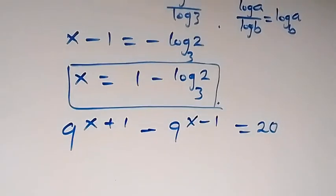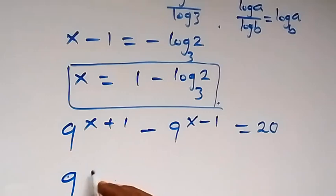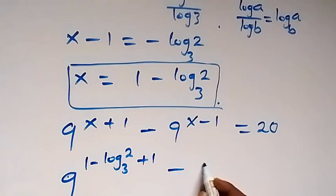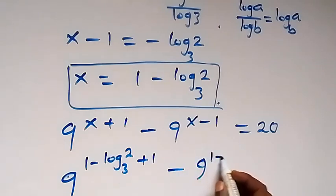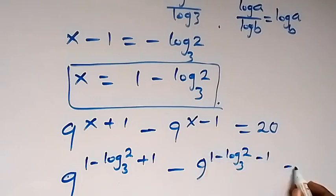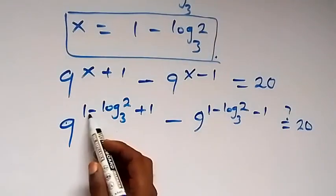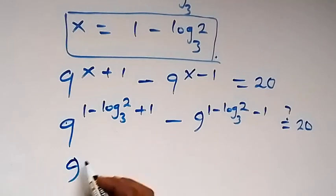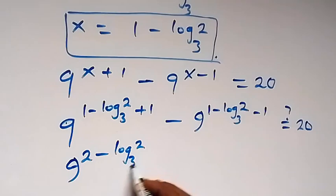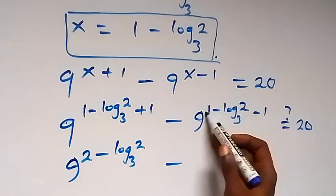Now substituting x equals 1 minus log base 3 of 2, this becomes 9 raised to the power (1 minus log₃2) plus 1, then minus 9 raised to the power (1 minus log₃2) minus 1, equals 20. From here, 1 plus 1 is 2, so the first exponent becomes 2 minus log₃2. And 1 minus 1 cancels out, so the second exponent becomes minus log₃2.